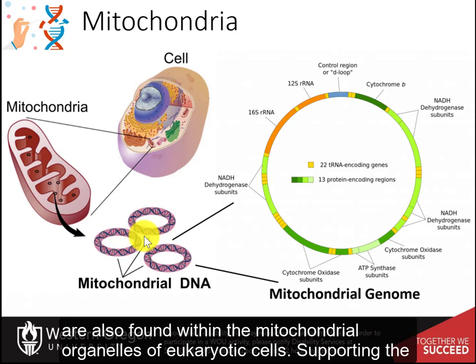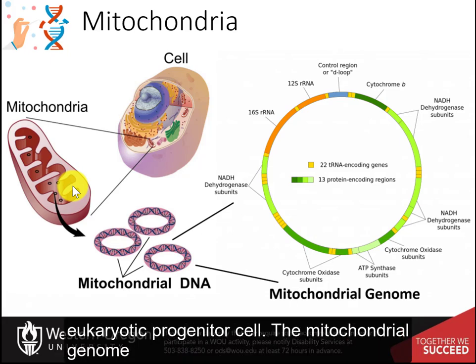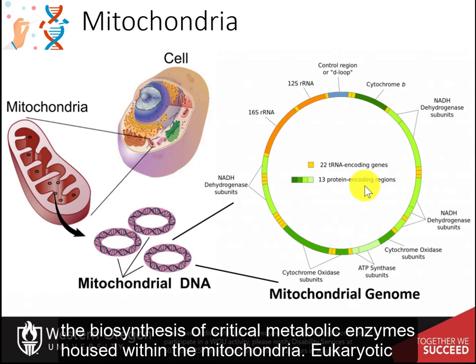Circular chromosomes are also found within the mitochondrial organelles of eukaryotic cells, supporting the hypothesis that they originated as prokaryotic organisms that became symbionts with an early eukaryotic progenitor cell. The mitochondrial genome contains 13 protein encoding regions and 22 tRNA encoding genes. These are involved in the biosynthesis of critical metabolic enzymes housed within the mitochondria.